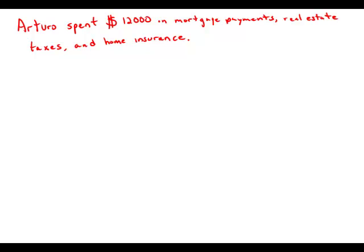I'm going to represent mortgage payments as M, real estate taxes as T, and home insurance as I. So we have that M plus T plus I equals $12,000. And what we'd like to be able to figure out is individually what is the value of T.